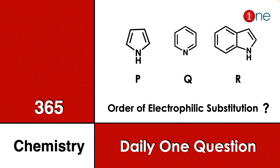Welcome to One Chemistry. This is the 365 Chemistry Series — one daily question for you. Here, three different aromatic compounds are given: P is pyrrole, Q is pyridine, R is indole. Heterocyclic nitrogen is present in each, and you have to find the order of electrophilic substitution reaction.